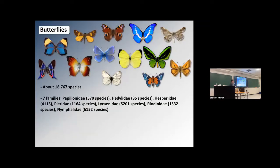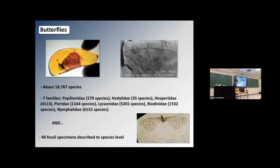First I wanted to make a little introduction to butterflies. Everybody knows more or less what a butterfly looks like. We have about more than 18,000 species of butterflies described. They're fairly well known and very charismatic — probably one of the best known groups of insects, distributed in seven families.